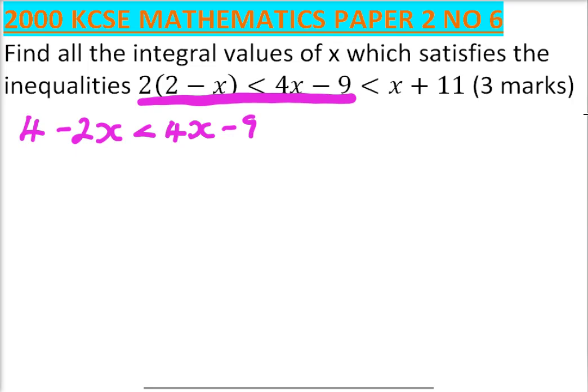Take x to the other side, minus 2x becomes positive. So 4x plus 2x will give you 6x. Divide both sides by 6.